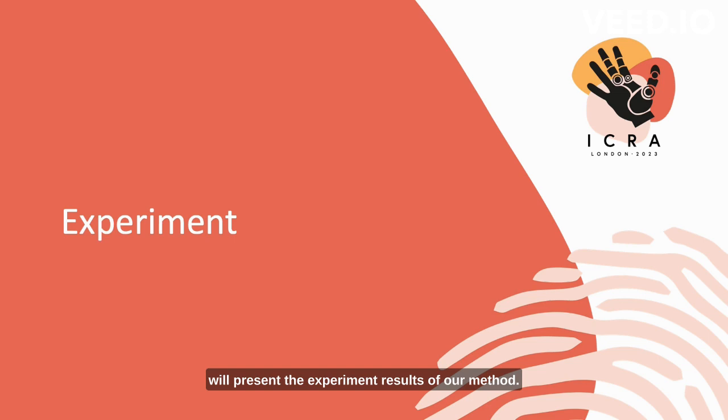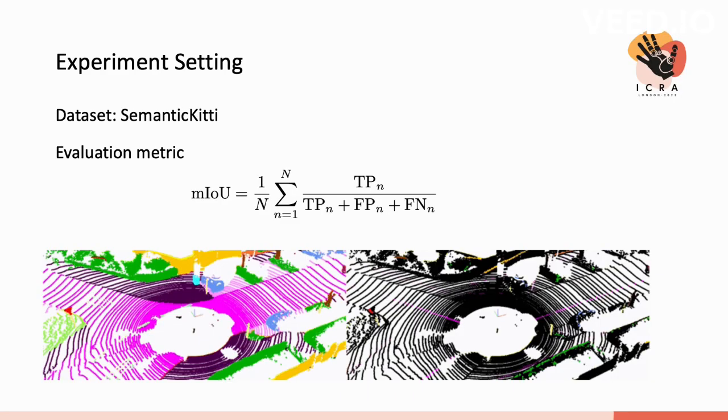Finally, I will present the experiment results of our method. We test our methods on the popular Semantic KITTI dataset. This dataset provides pointwise semantic labels for KITTI dataset. For evaluation, we use mean IoU, which is the standard evaluation metric for semantic segmentation.